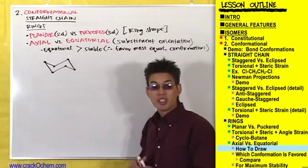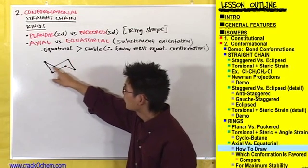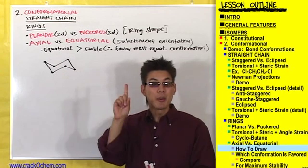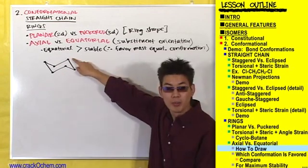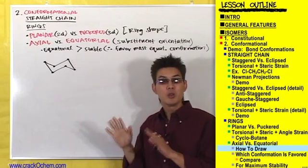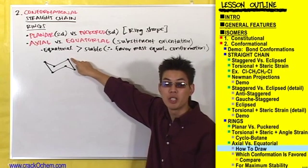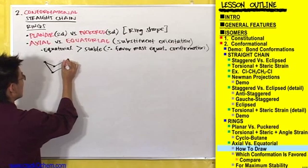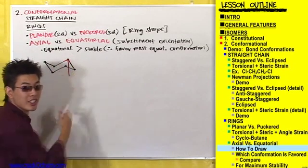If I look at this chair, there are six carbons on it: one, two, three, four, five, six. And each of those six carbons is either pointing up or down. For example, let's look at this carbon — this carbon is pointing up. Imagine that this is the head of an arrow pointing straight up like this.